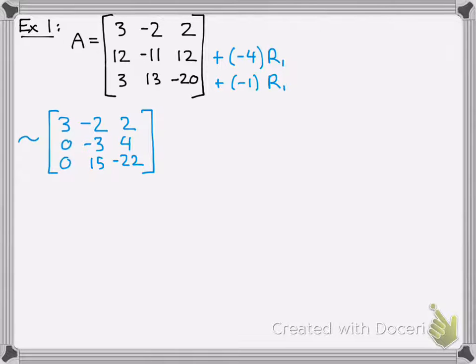So you should get this as you go across again. So negative 4 times negative 2 is positive 8, minus 11 is negative 3. Negative 4 times 2 is negative 8 plus 12 is 4. Okay, you get the point. So row reduction.